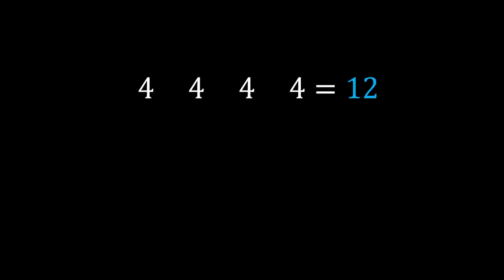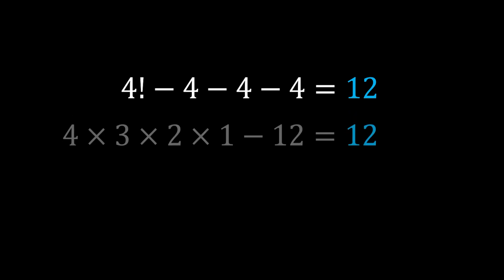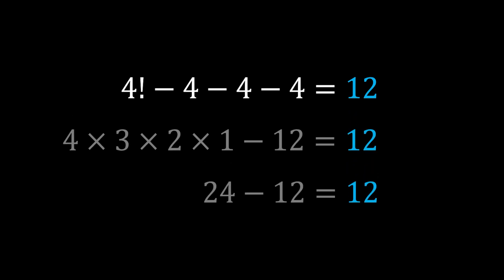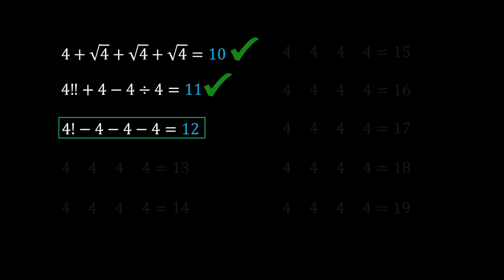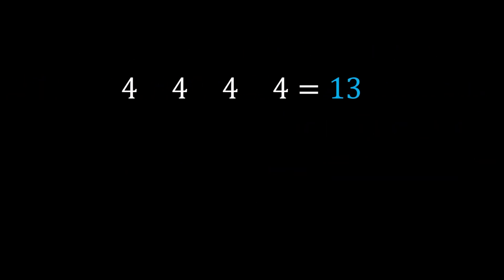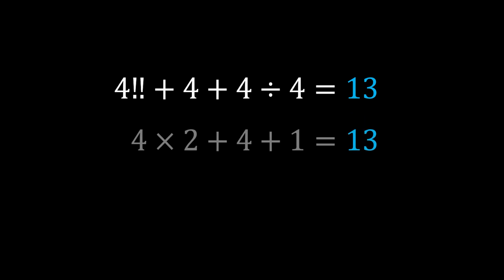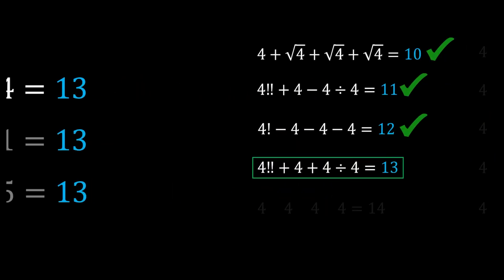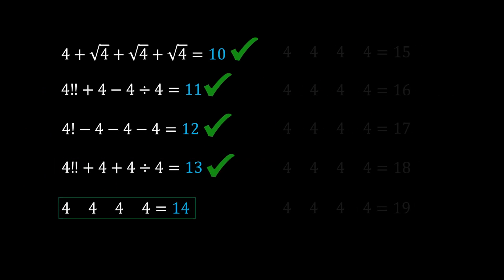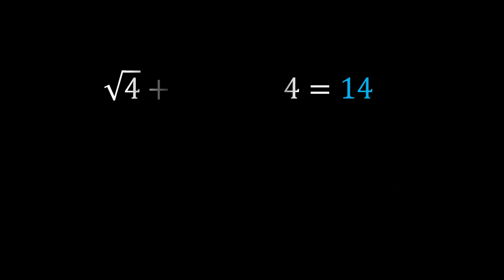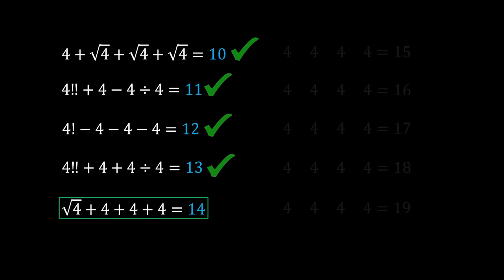Number 12: 4! − 4 − 4 − 4 = 24 − 12 = 12. Number 13 also uses double factorial: 4!! + 4 + 4 ÷ 4, which is 4×2 + 4 + 1 = 8 + 5 = 13. Number 14: √4 + 4 + 4 + 4 = 2 + 12 = 14.